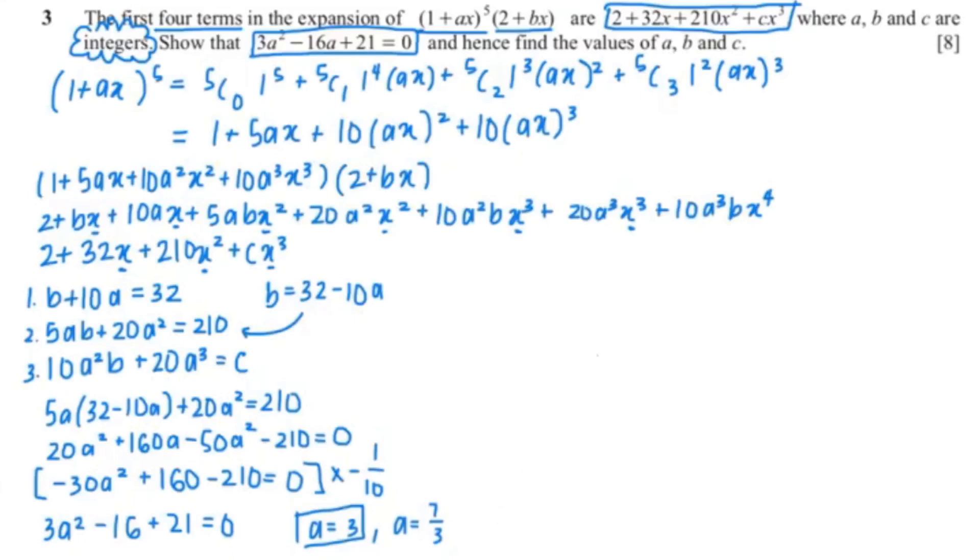So since we have our a, we can now find our b, which equals 32 minus 10 times 3 giving us 2. Since we found our a and b, we can now find our c, so our c is 10(3)² times 2 plus 20 times 3³. And that would be 180 plus 20 times 27 which is 540 giving us 720. So now we have all our values: a is 3, b is 2, and c is 720.